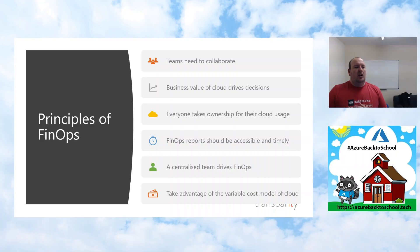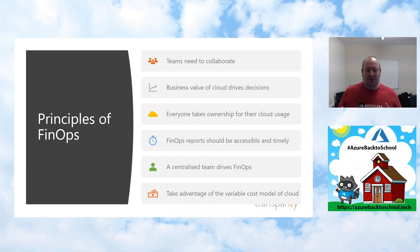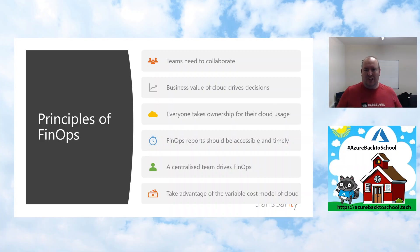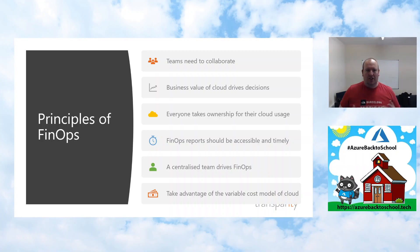Another principle is around business value of cloud driving decisions — it's important not to lose sight of what the business value of cloud is to your organization. The next principle is around everyone taking ownership of their cloud usage. Application groups or product groups should take ownership of what they spend and work to reduce cost where it's too high, aligning cloud usage with business value. FinOps doesn't say optimize and reduce everything — it says optimize to a level acceptable to your business.